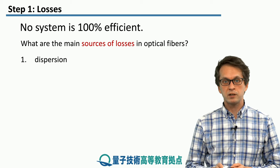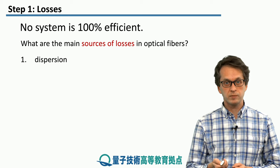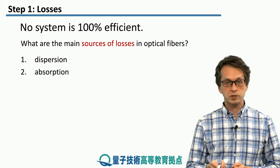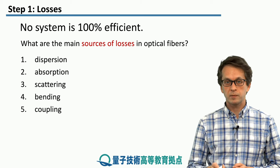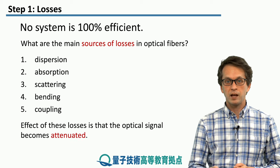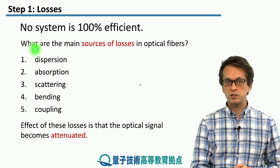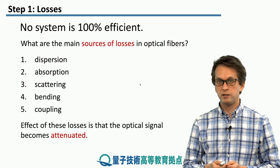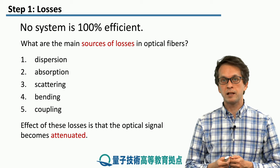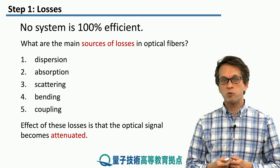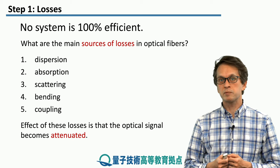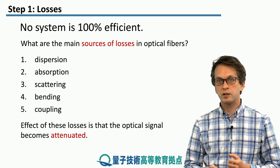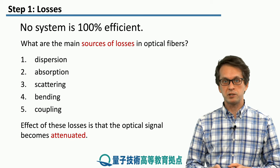We will consider the following five sources of loss: dispersion, absorption, scattering, bending, and coupling. The result of all of these sources of loss is that our signal becomes attenuated — meaning, if we put in a signal with some input power, what we get out will have less power. So it is very important to know how much of the signal becomes attenuated and how we can prevent or combat this attenuation.